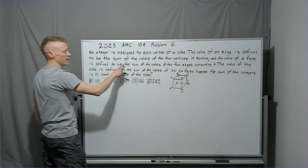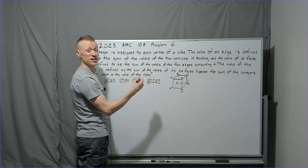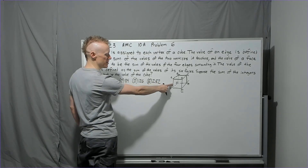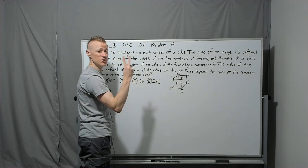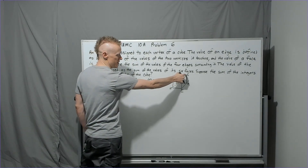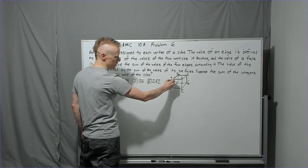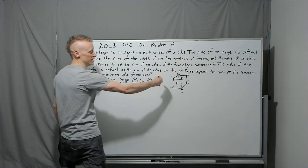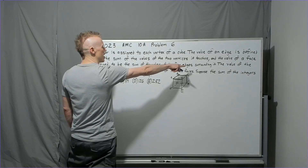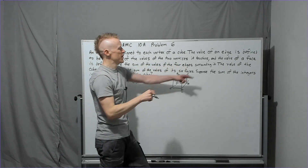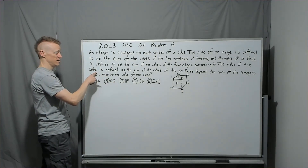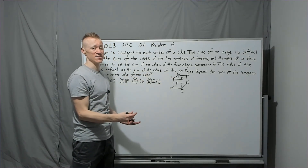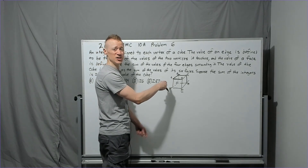The value of a face is defined to be the sum of the values of the four edges surrounding it. So let's think about what's happening with vertex a — it's on two edges of this face, meaning on this face you're using the value of a twice, because a+b is there and a+d is there. The value of the cube is defined as the sum of the values of its six faces.